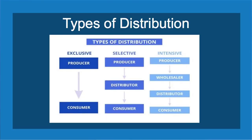There are three types of channel of distribution. The first is the direct channel — from the producer, goods go directly to the consumer. In the second channel, goods go from the producer to a distributor, who can also be considered a wholesaler or agent, and then to the consumer. In the third type, goods go from producer to wholesalers, then to retailers or distributors, and ultimately to consumers.